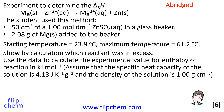We have to show by calculation which reactant was in excess. Then we have to use the data to calculate the experimental value for enthalpy of reaction in kilojoules per mole. We can assume that the specific heat capacity of the solution is 4.18 joules per kelvin per gram, and that the density of the solution is 1.00 grams per centimeter cubed.